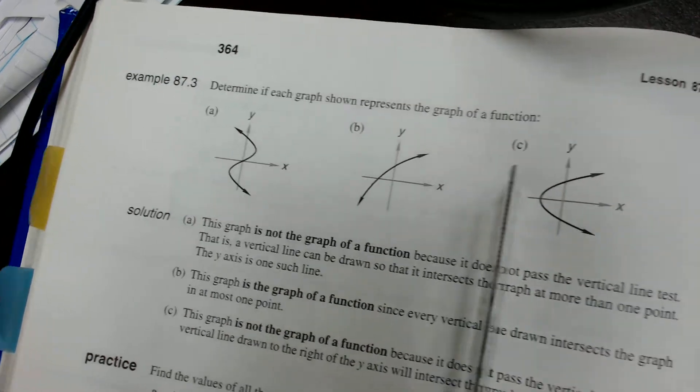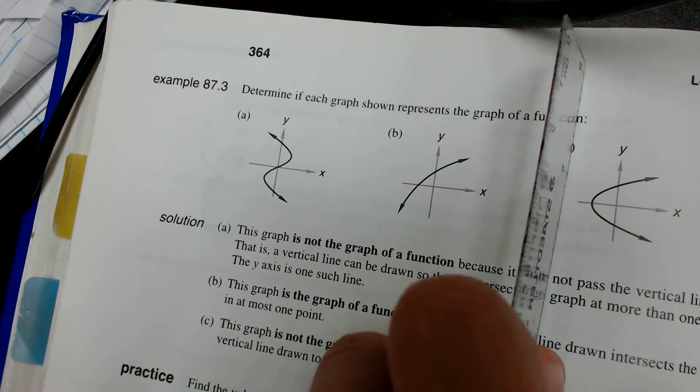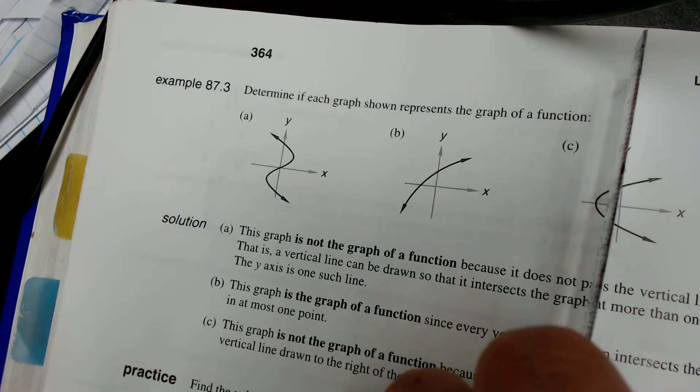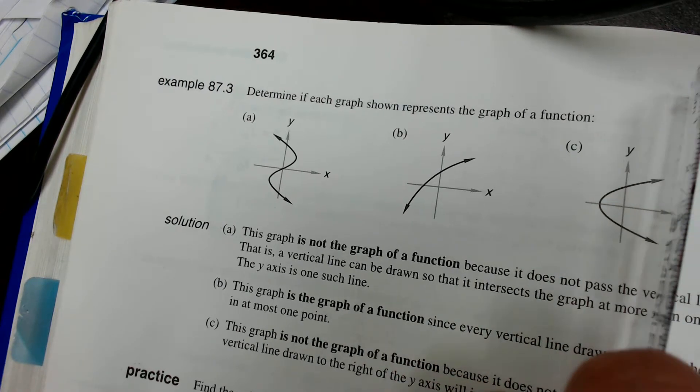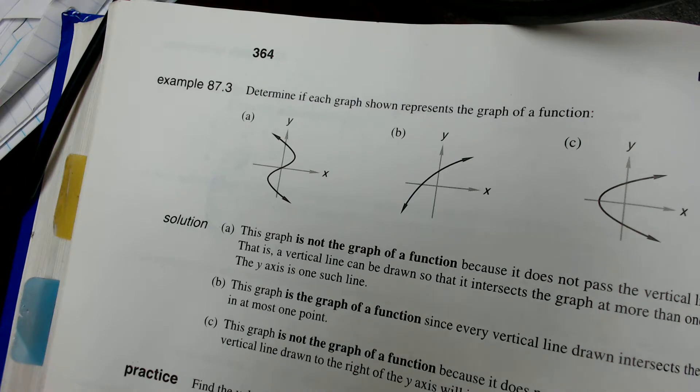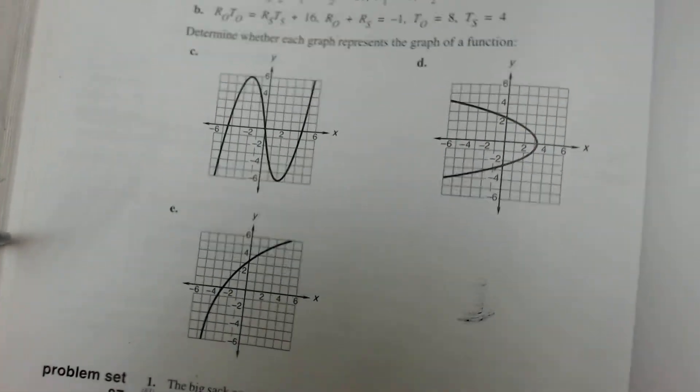Now let's go to the last one. If I trace this one from left to right, I see right here I'm touching it at two points, two points, two points. So this is not a function. That's the vertical line test. Let's do a couple more just so we can get a feel for it.